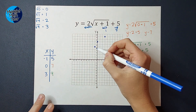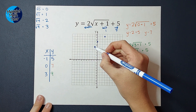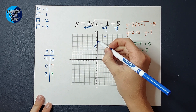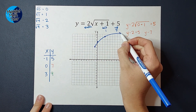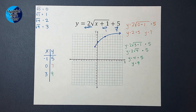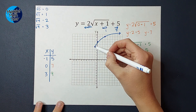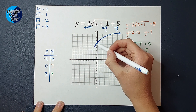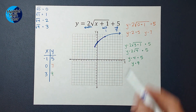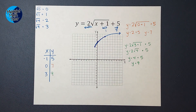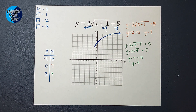Now I have enough points. I'm feeling pretty confident my graph is going to look something like that. Hopefully this made sense. If you need some more videos like this with more examples, I'll link a playlist for you. Thanks!